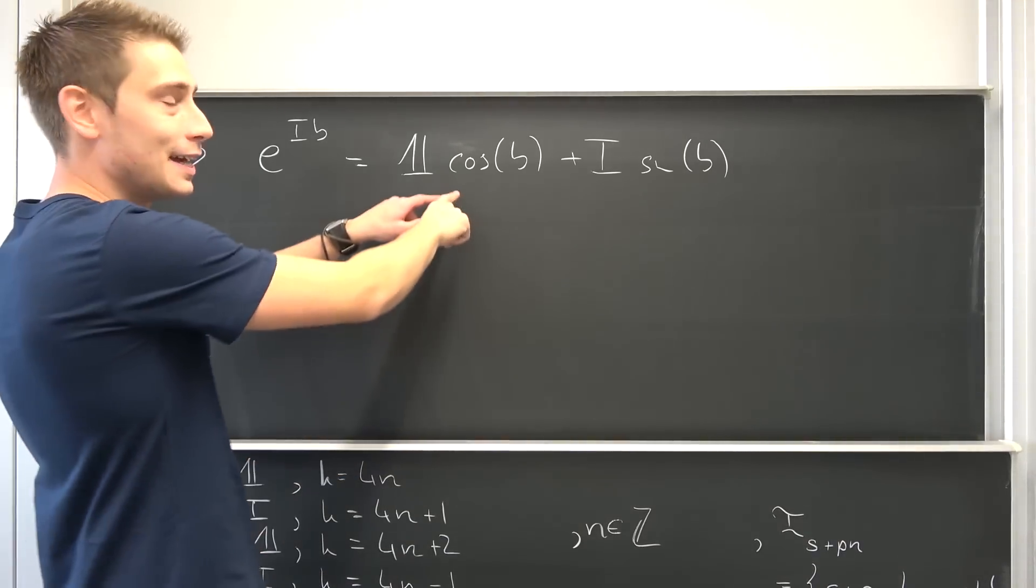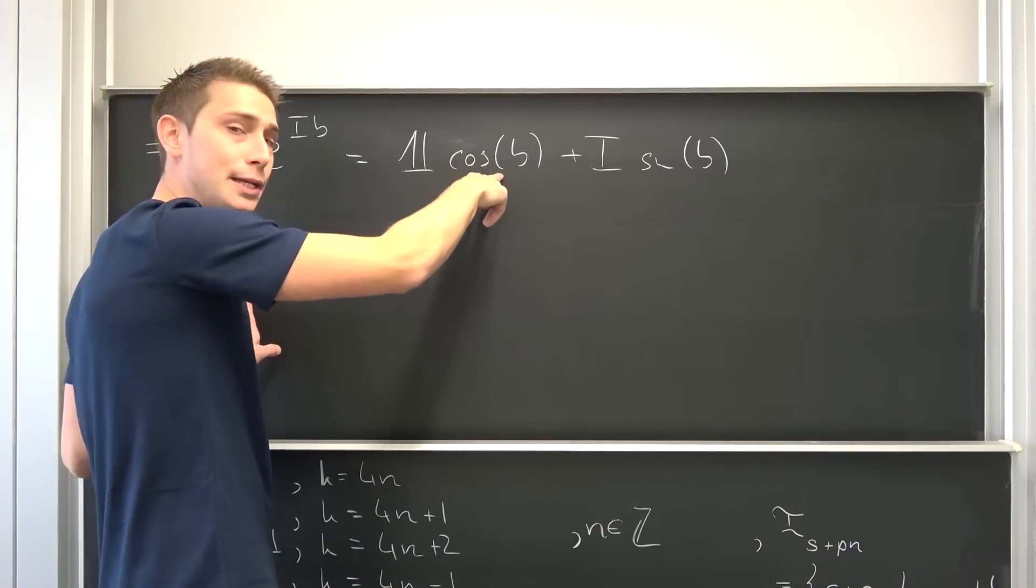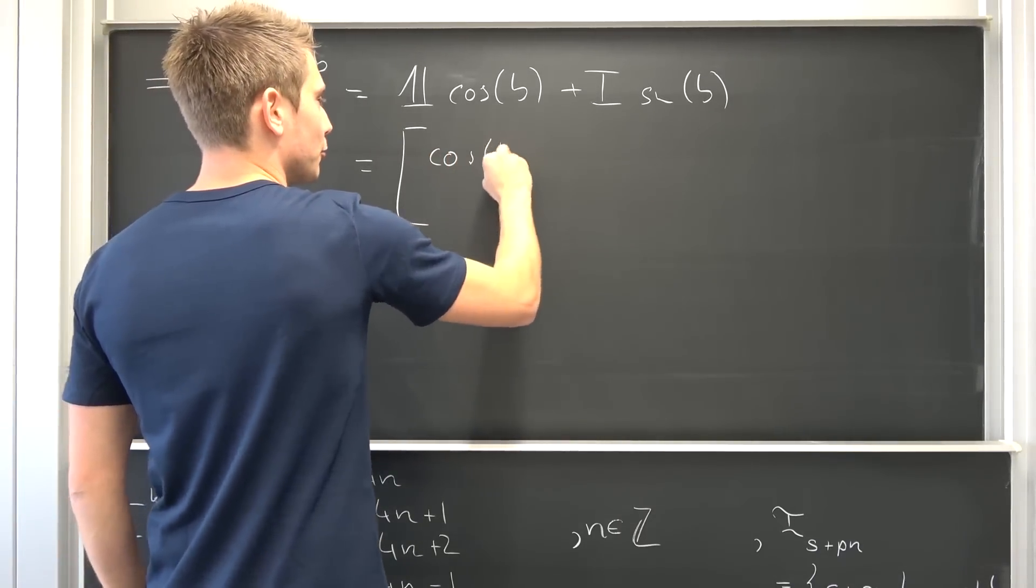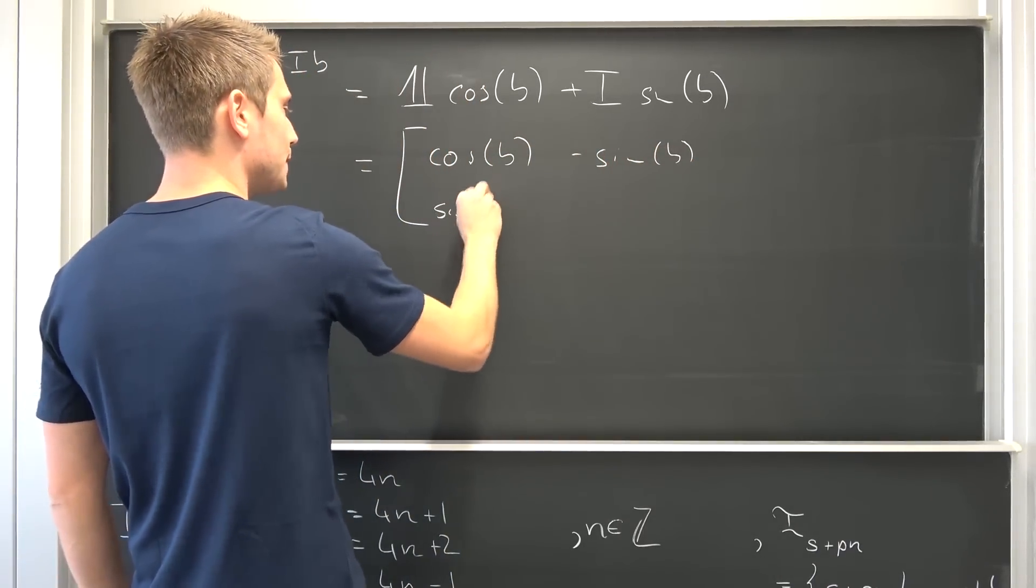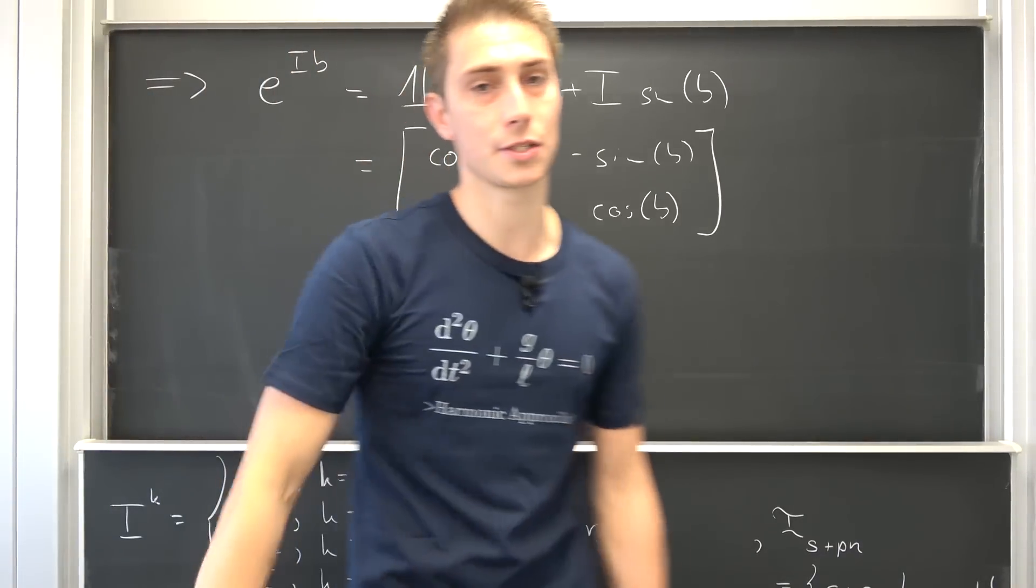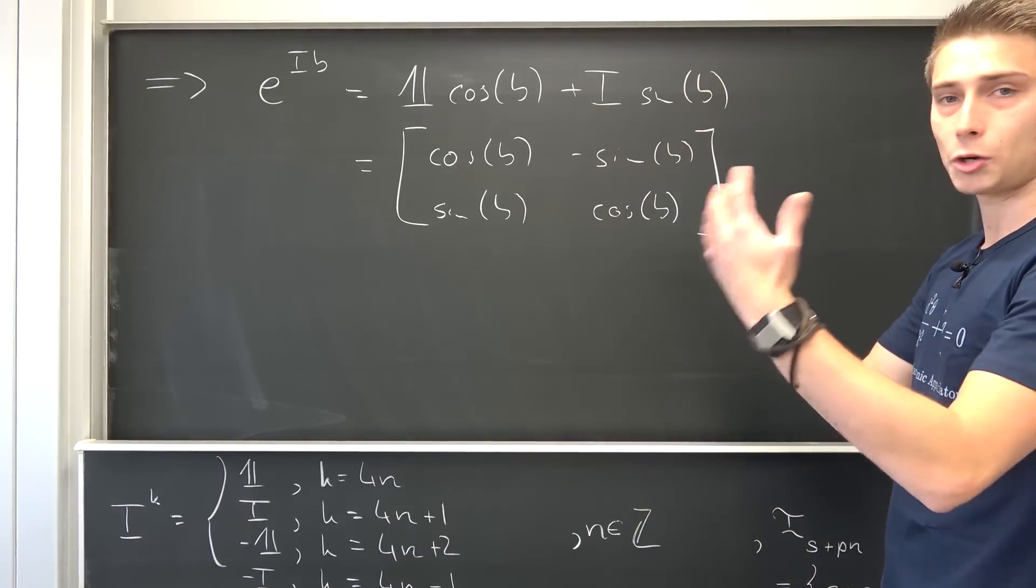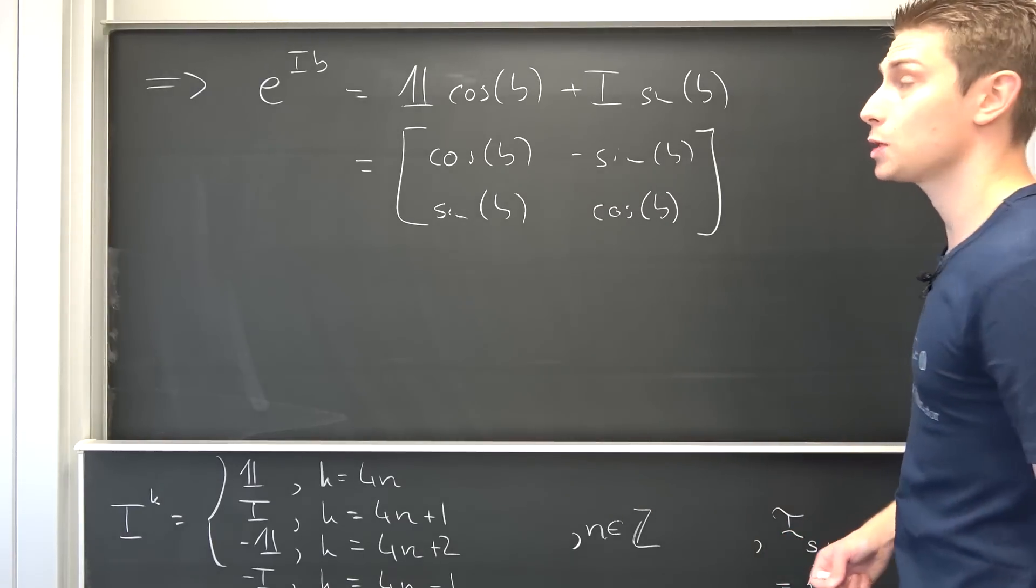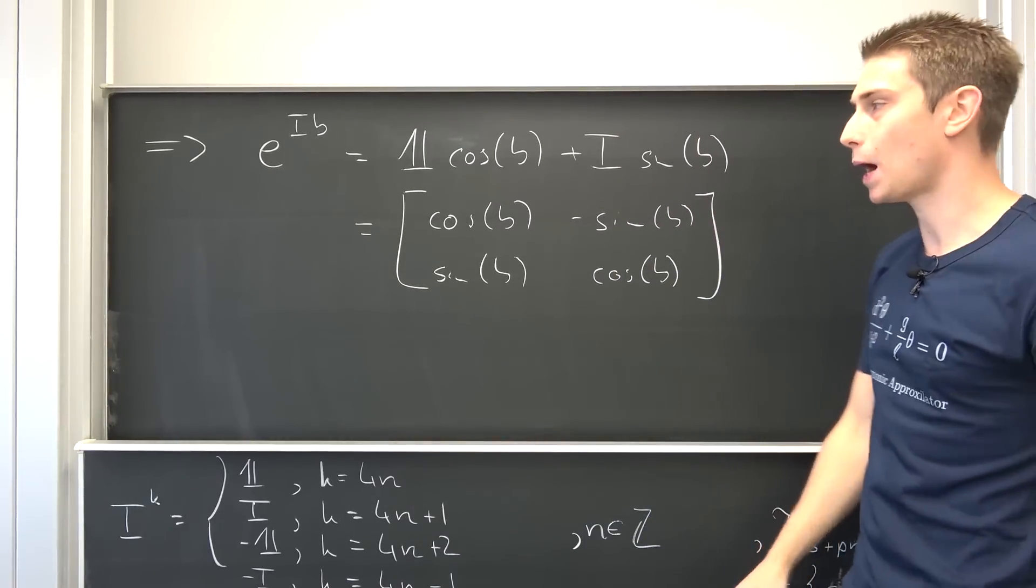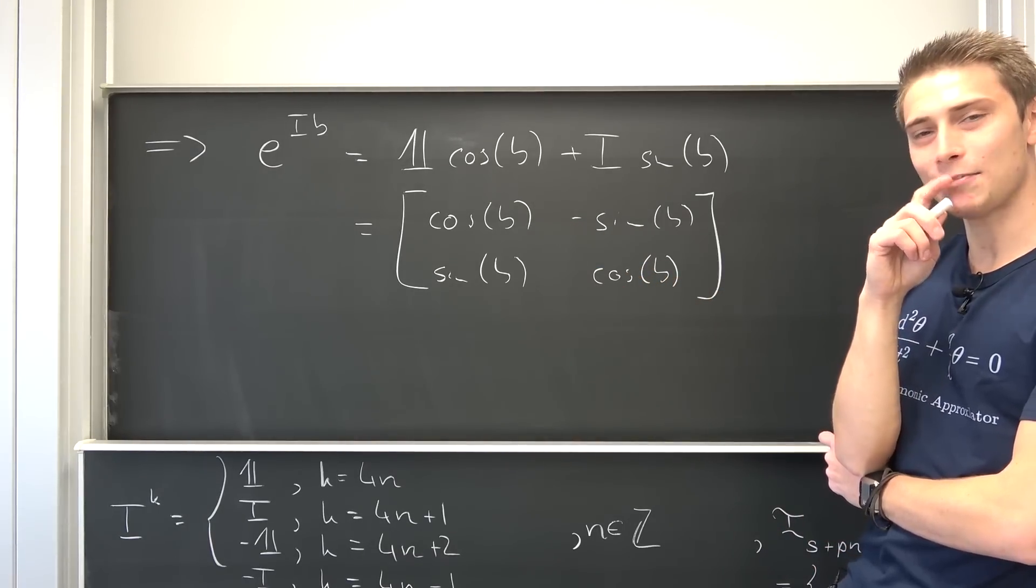Now, addition on matrices is defined point wise. This right here is just a complex number. We have a real part and an imaginary part, meaning overall this is going to result in the matrix: cosine of B, negative sine of B, sine of B, cosine of B. And this right here is one of the most important results and it's going to make so much sense when you speak about complex numbers in a geometric way, talking about the geometric intuition behind complex numbers which we are going to do in the next episode.